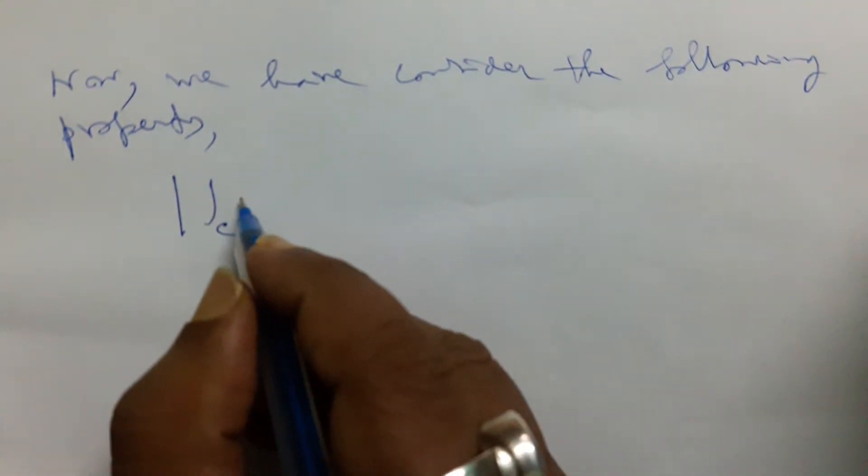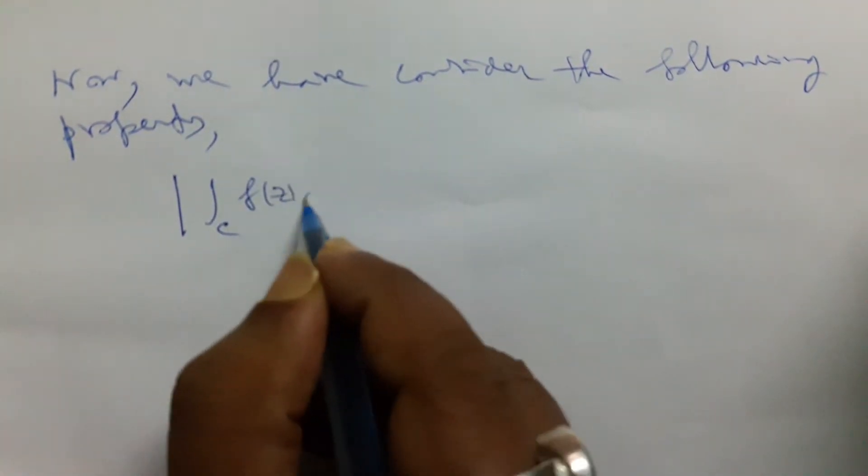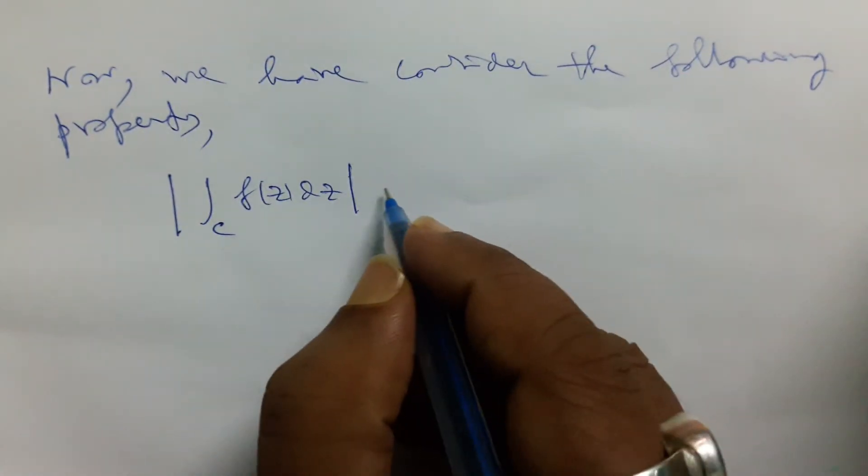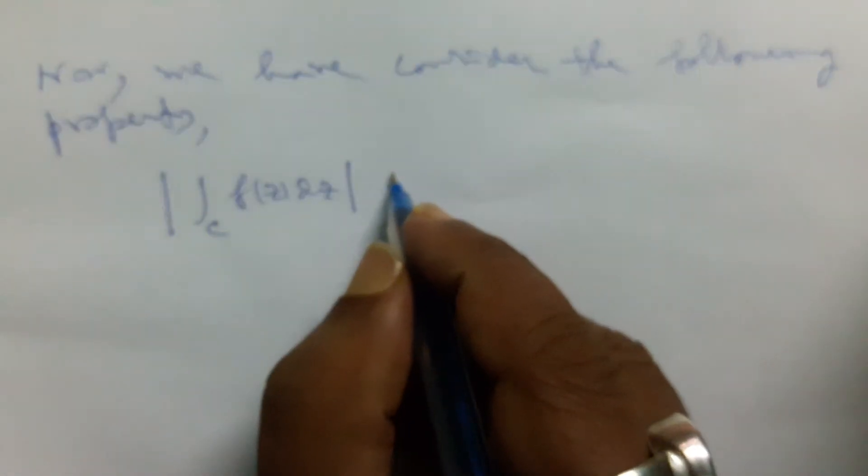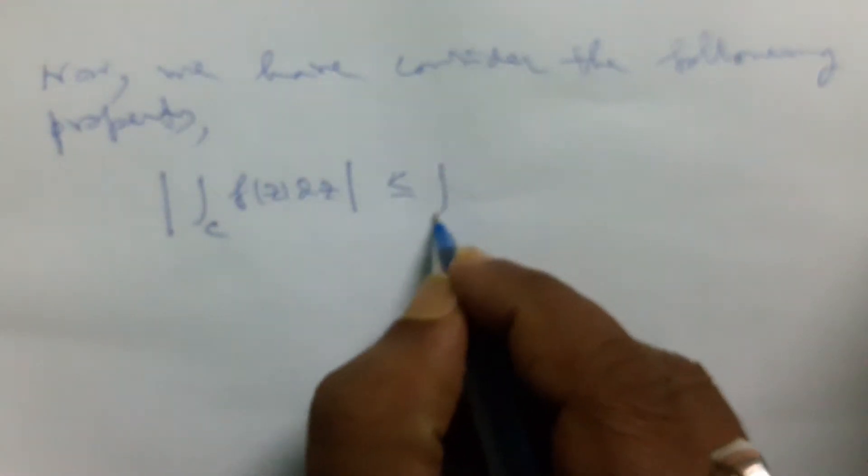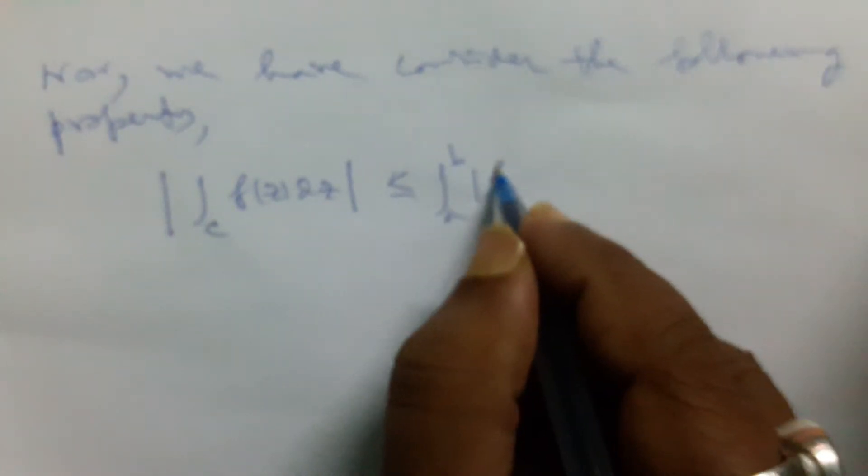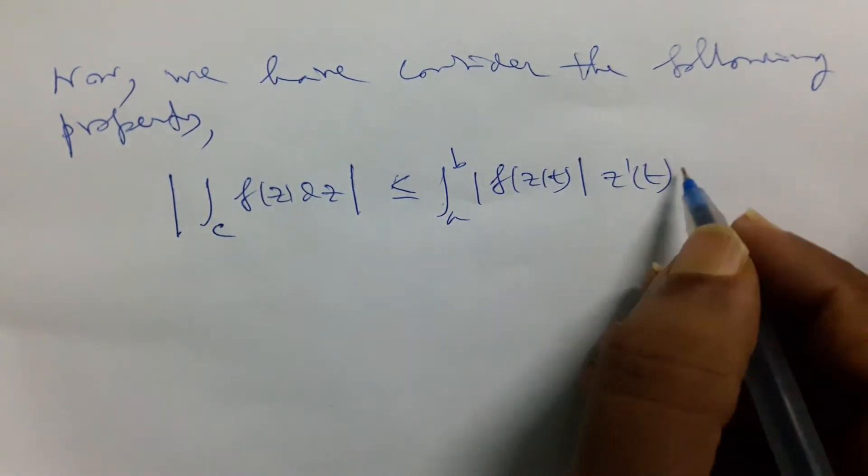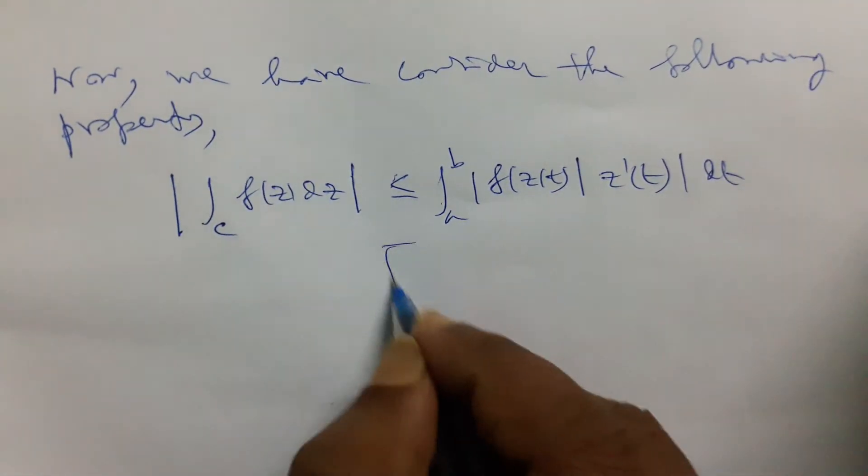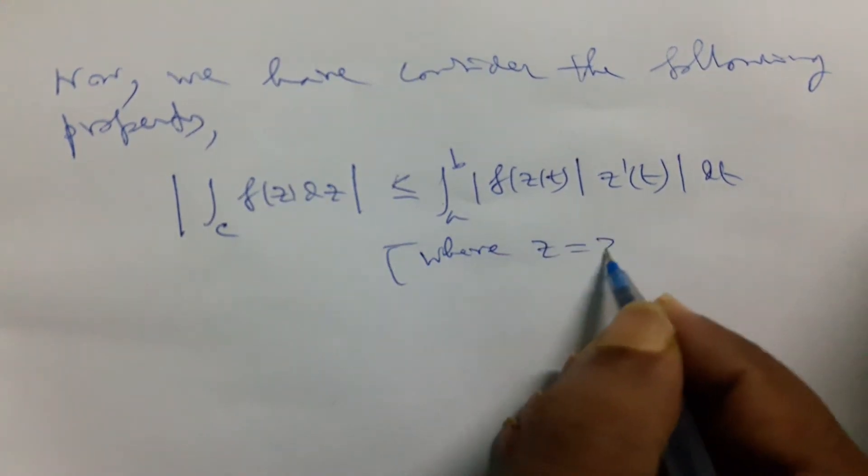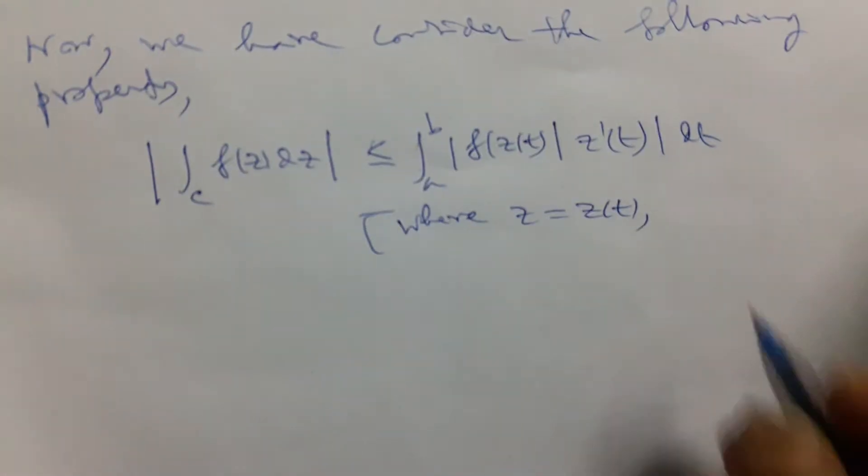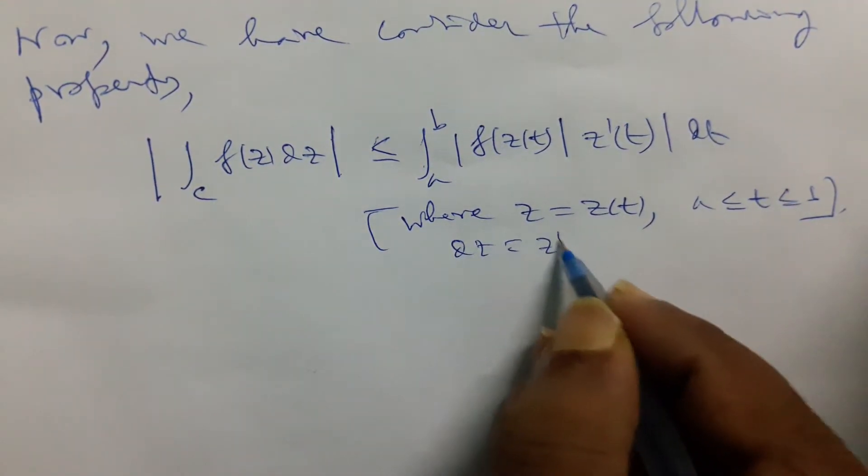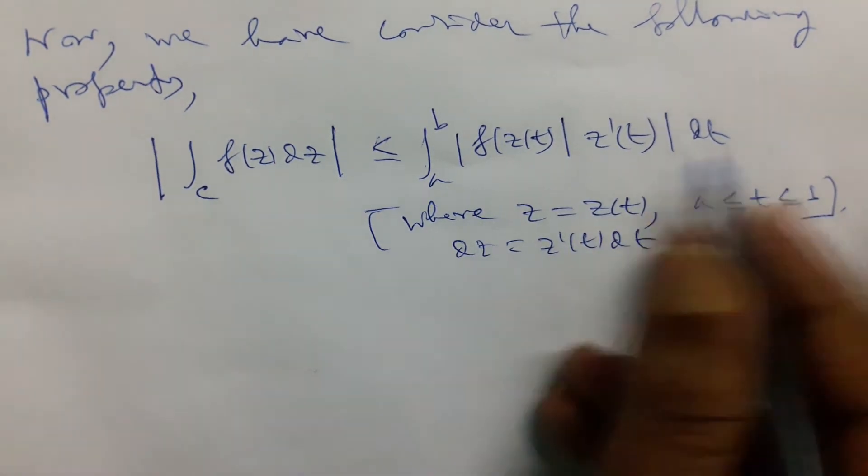So, the modulus of contour over C of f(z)dz will be represented by the integral over C of the modulus of f(z(t))z'(t)dt, where z equals z(t), t is the parameter, and a less than or equals to t less than or equals to b. Therefore, dz equals z'(t)dt, substituting this value.